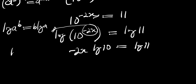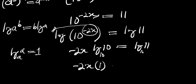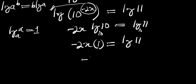Also, if you have log of a to the base of a, this equals 1. Remember, this log of 10 is to the base of 10, and this log of 11 is to the base of 10 as well. So since this is log of 10 to the base of 10, we are going to have 1. We now have negative 2x times 1, and this equals log of 11.